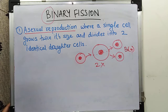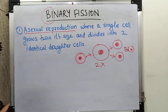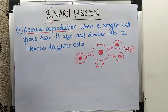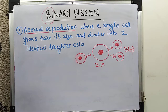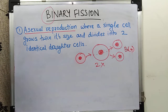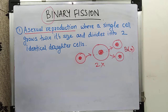Binary fission is the mode of reproduction in many prokaryotes including archaea, cyanobacteria, eubacteria, and some eukaryotes like amoeba and paramecium. Even mitochondria — the organelles inside our cells — also divide by binary fission. Please note this down in your notebooks: binary fission is the mode of reproduction.